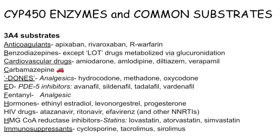Now let's continue with CYP enzymes and the common substrates. We have CYP3A4 substrates organized according to the alphabet. We have anticoagulants like apixaban, rivaroxaban, and the R-enantiomer of warfarin — not the major one. Then we have benzodiazepines, except for the '-lam' drugs, which are metabolized via glucuronidation.